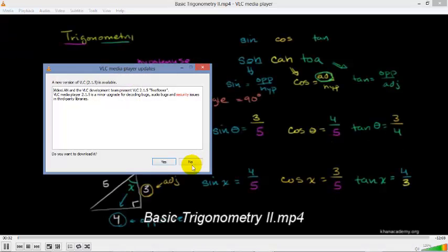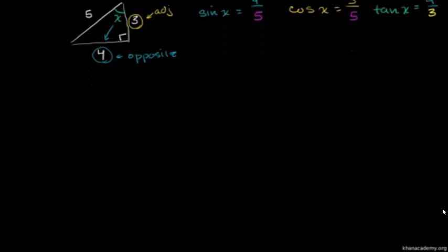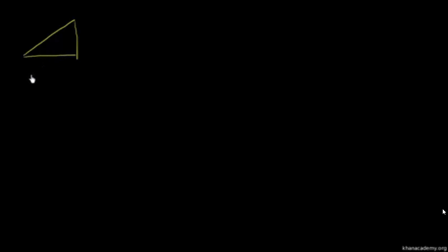Let's do a ton more examples to make sure we're getting this trig function thing down well. Let's construct ourselves some right triangles — and I want to be very clear, this will only work in right triangles. So let's say I have a triangle where this length down here is 7, and the length of this side up here is 4. Let's figure out what the hypotenuse is going to be.